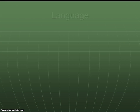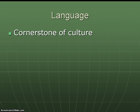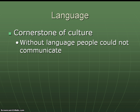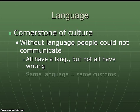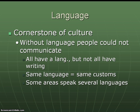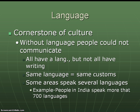The third element is language. Language is considered to be the cornerstone of culture because without language, people can't communicate, and if you can't communicate, you can't pass on your culture. All cultures have some kind of spoken language, but not all have a form of writing, and that's fine as long as you have some kind of spoken or even body language to convey communication. Often, people who share the same language have similar customs and traditions. Canada, for example, speaks English and French as national languages. But in places like India, people speak more than 700 different languages and dialects.